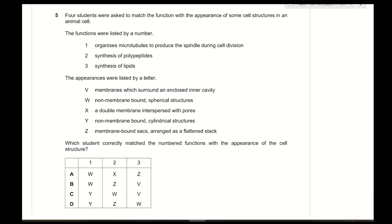Question 5: Which student correctly matched the numbered function with the appearance of the cell structure? For function 1 — organizes microtubules to produce the spindle during cell division — during prophase, the centrioles made of microtubules organize these. The suggestions are W (non-membrane-bound spherical structures — ribosomes) and Y (non-membrane-bound cylindrical structures — microtubules). Since centrioles are made of microtubules, function 1 corresponds to Y.